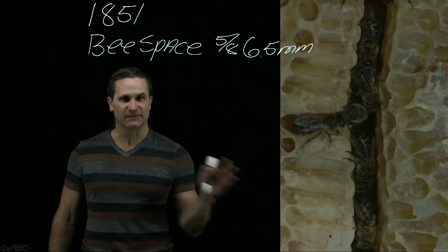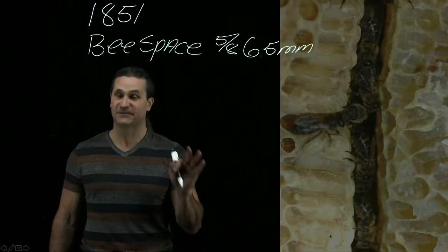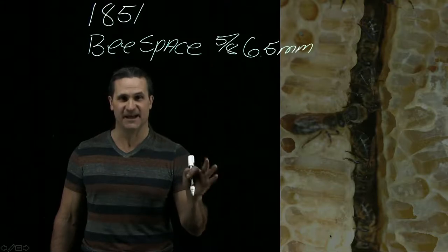So what Dr. Langstroth did was he discovered bee space and then he arranged the dimensions of the hive such that all the frames and all the boxes have a 5/8 inch gap.